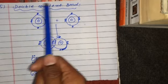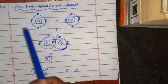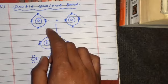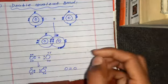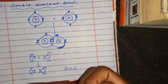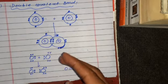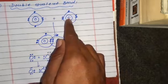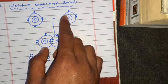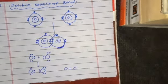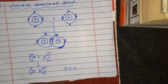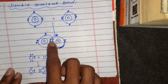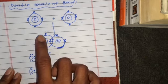Now we will see the double covalent bond. For that purpose we have oxygen, because there are six electrons in the outermost shell of oxygen. Oxygen needs two more electrons to satisfy its octet rule. For that purpose, it tends to share two electrons with another oxygen atom, and that oxygen atom will also share two electrons. After sharing, they both have four shared electrons.